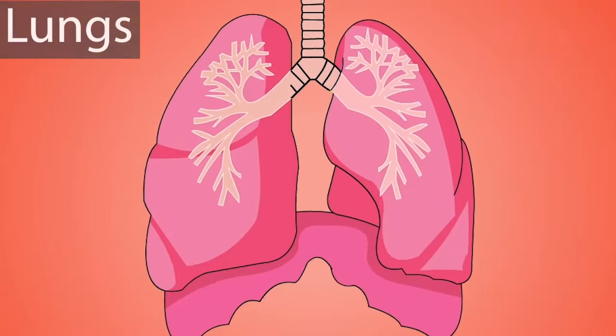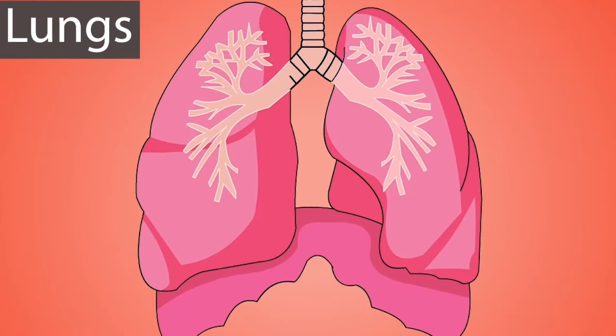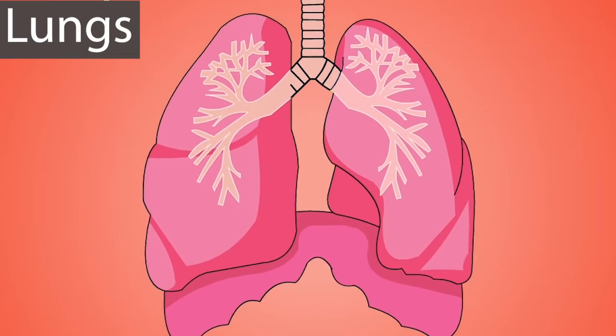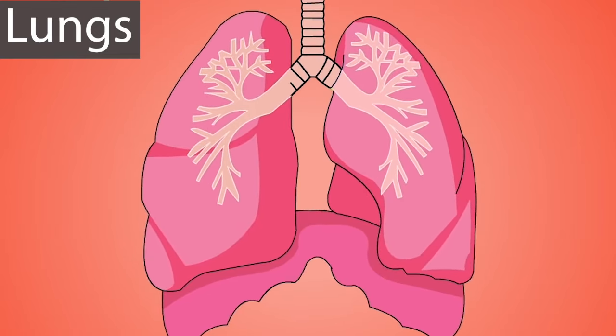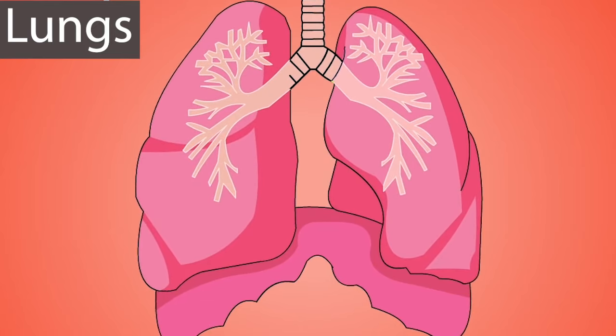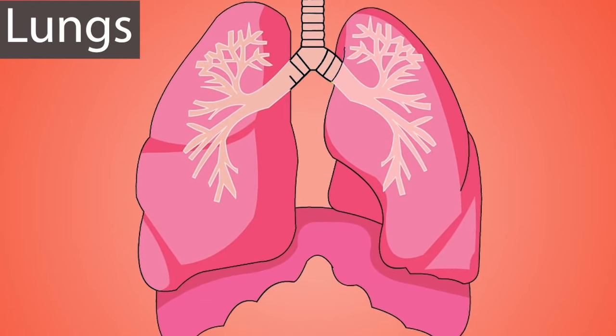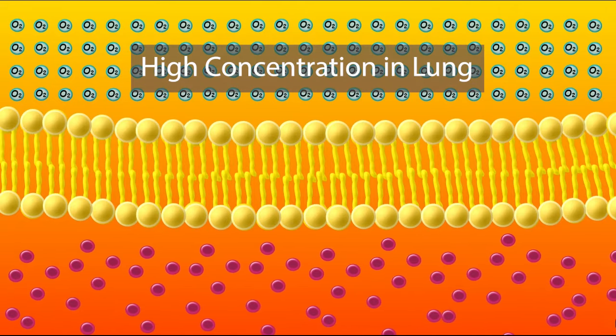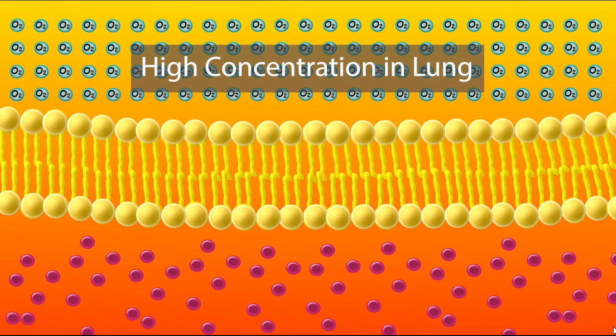Now let's take a look at a model of a really important real-life use of diffusion: keeping you alive by getting oxygen into your blood. Take a deep breath and we're going to look at what's happening in your lungs as a result. When you breathe in, oxygen rushes into your lungs, producing a high concentration of oxygen in your lung tissues.